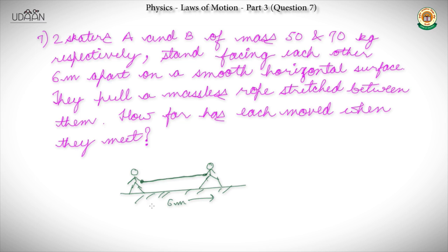To solve this question, we see the situation: one skater is here, one skater is there on the frictionless surface. We are given mass of A is 50 kg and mass of B is 70 kg. As we have seen in earlier questions, making a diagram makes it easier. For the free body diagram there is force and tension.